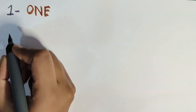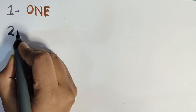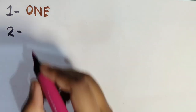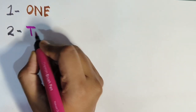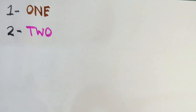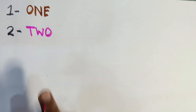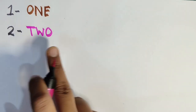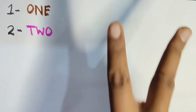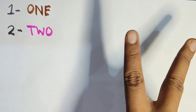Next is two. So how do you spell two? T-W-O. Repeat after me: T-W-O. Two. T-W-O. Two. And these are my two fingers, okay.